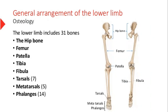If you see the osteology, the arrangement of bones, that is done in the same way as we had studied in the upper limb. We have the hip bone, then a very large femur. Down, the patella is the bone present on the anterior surface of the knee joint. Down we have the larger bone tibia and the smaller one fibula. Down we have tarsals, metatarsals, and then we have phalanges.